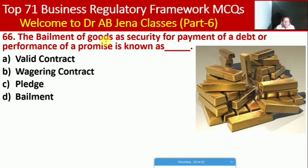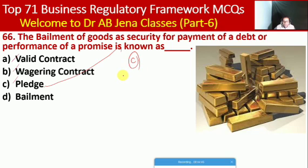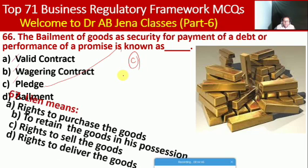Next MCQ: the deposit of goods as security for payment of a debt or performance of a promise is known as what? Whether valid contract, wagering contract, pledge, or payment. Here C is the right option — it is called a pledge.